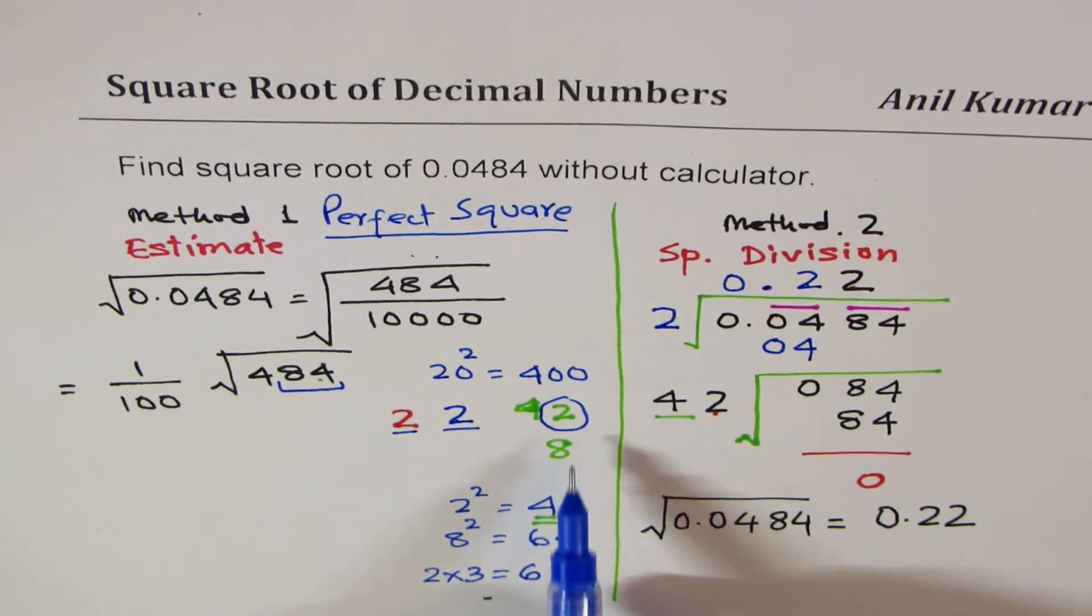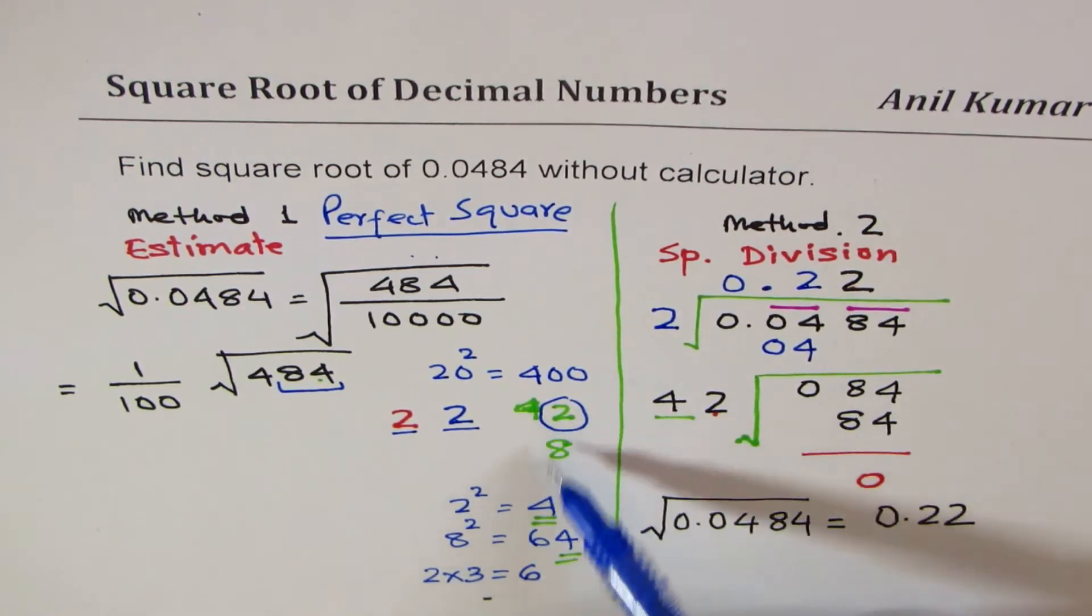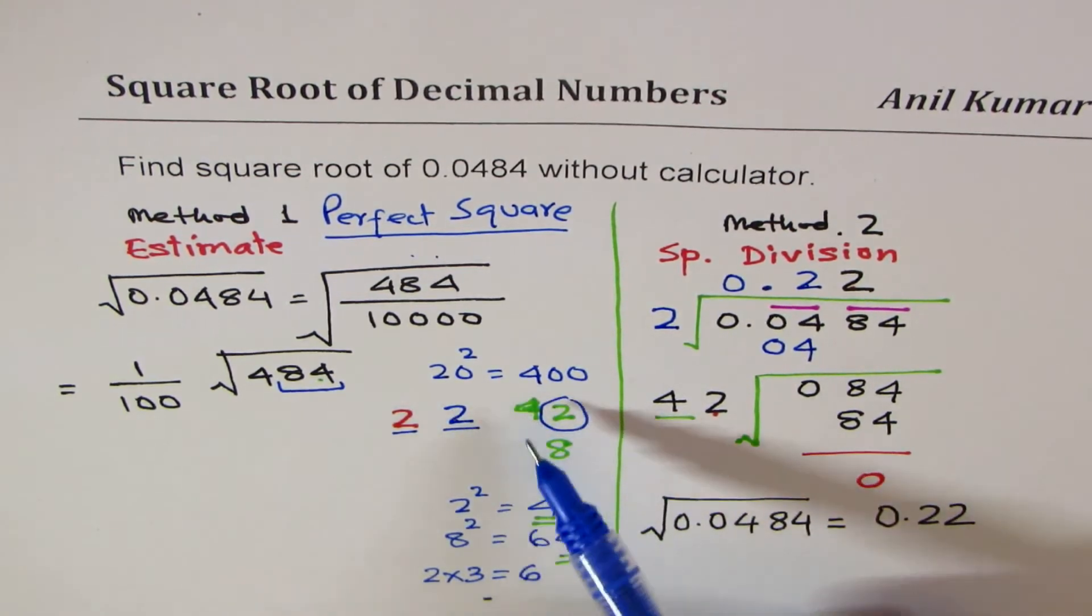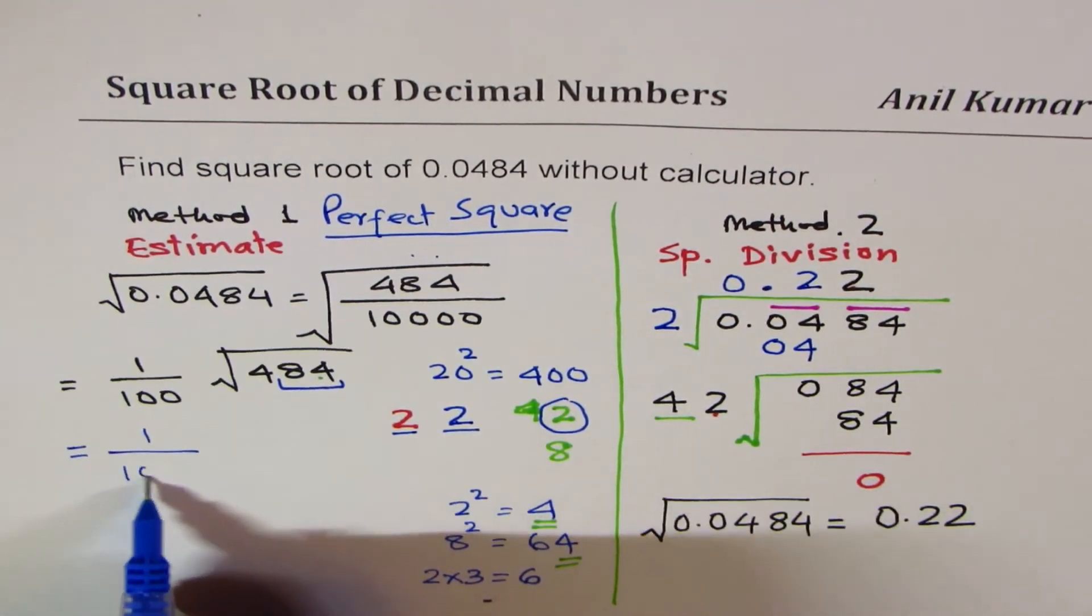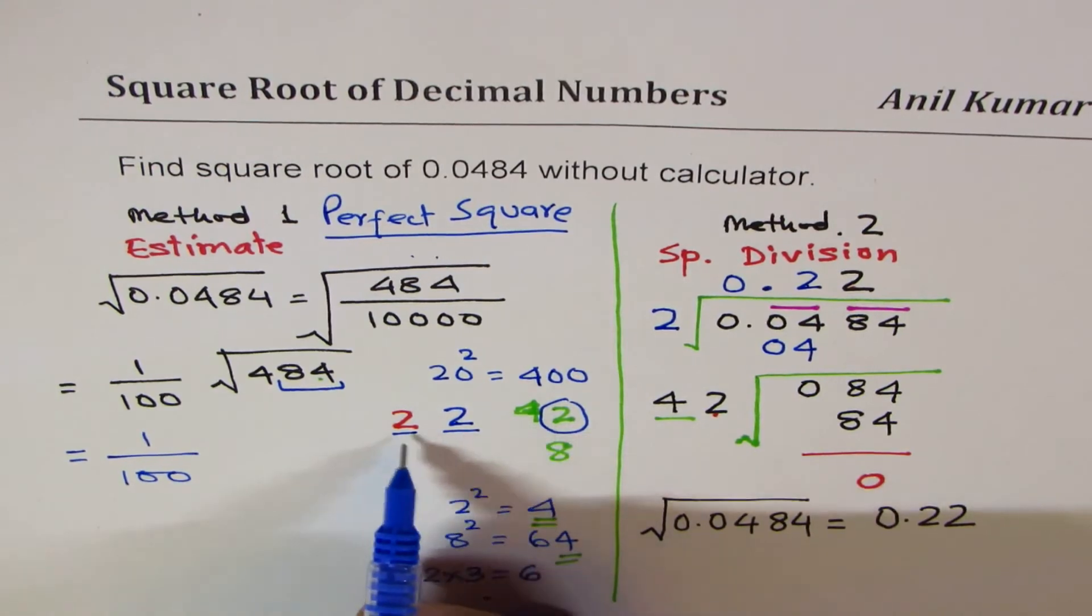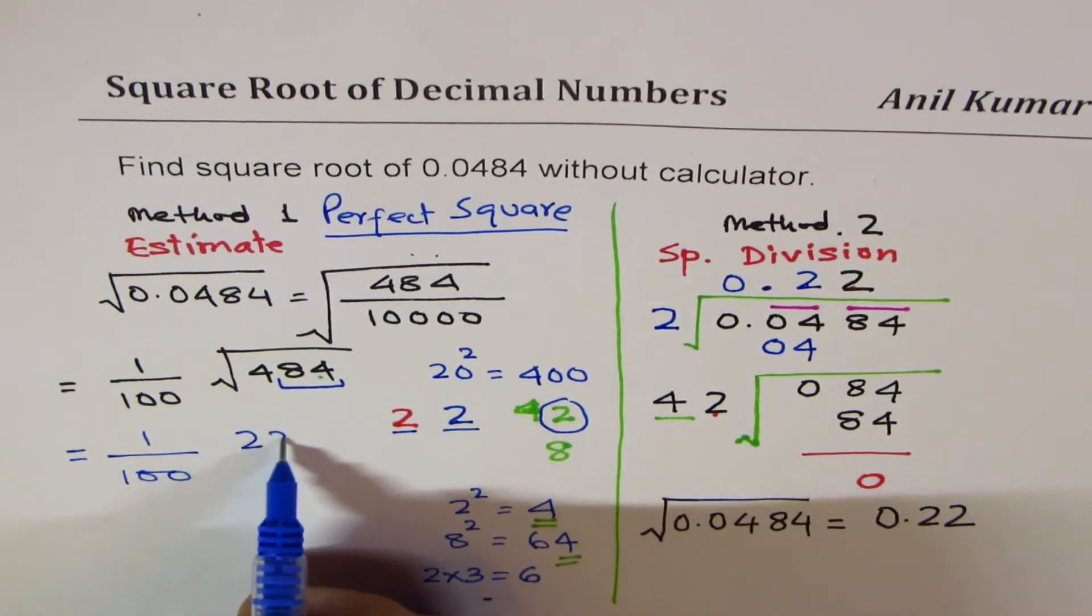Pick the lower. That is how you get perfect square. You can now write this as 1 over 100 times 22. 22 is our number.